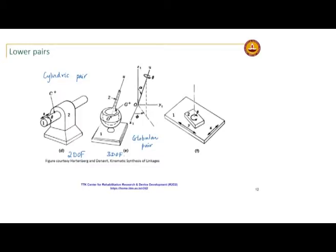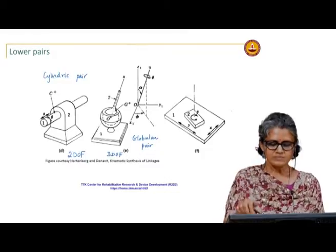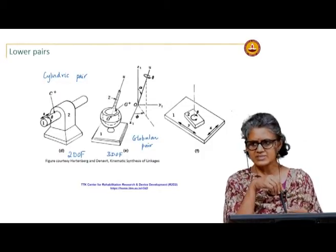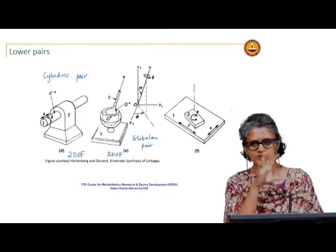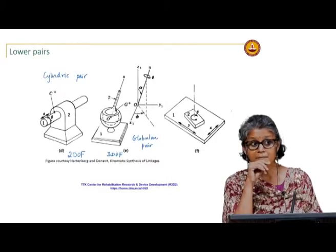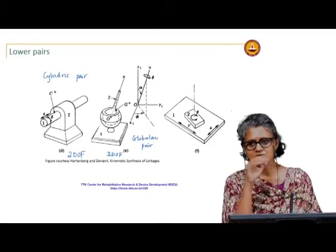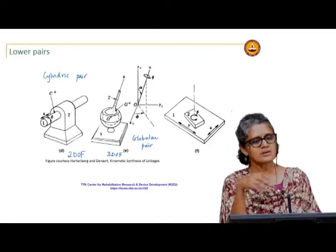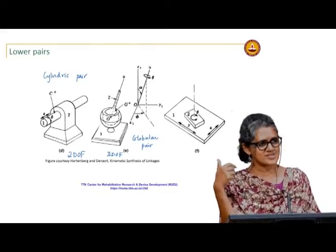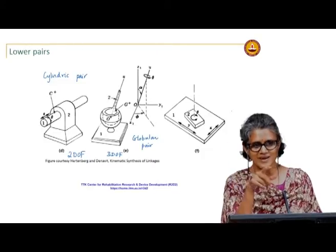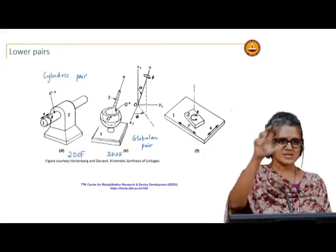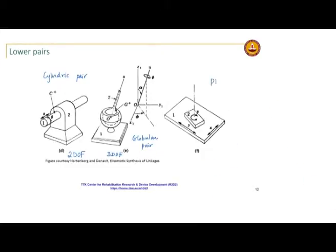The planar joint is also a lower pair — a block moving on a surface can translate as well as rotate with respect to that plane. An example of a planar pair is a duster on a board, or your drafter scale — those are examples of a planar pair. The planar pair has 3 degrees of freedom.